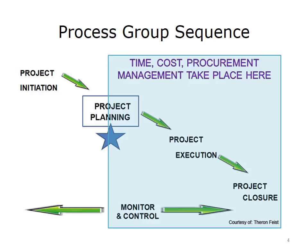Executing processes are performed to accomplish the work of the project and satisfy the project objectives. Monitoring and controlling processes involve tracking, reviewing, and controlling the progress and performance of the project, identifying required changes to the project management plan, and taking preventative or corrective steps. Closing processes are performed to finalize all activities and formally close the project or phase. Mindfulness of time, cost, and procurement management is important throughout the various processes, including during project planning, execution, and closure, as well as during project monitoring and control, which spans across all other processes.